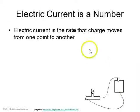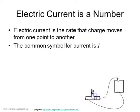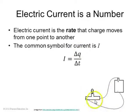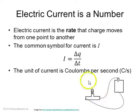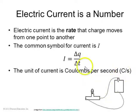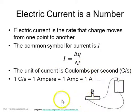Current is a number. Electric current is the rate that charge moves from one point to another. The symbol is I. If a certain amount of charge, delta Q, moves through a light bulb every amount of time, delta T, then we divide delta Q by delta T — that's the current. Charge is measured in coulombs, time is measured in seconds, so the unit of current is coulombs per second. We have a special name for that: it's called the ampere. One coulomb per second is one amp, with the letter A.